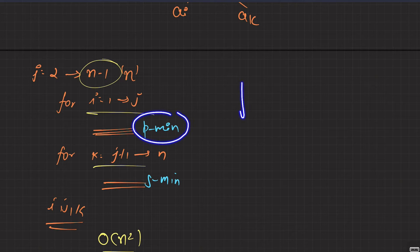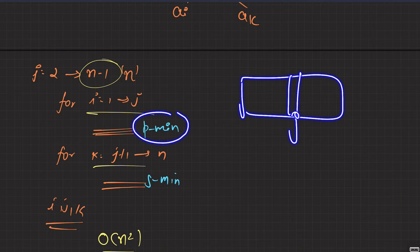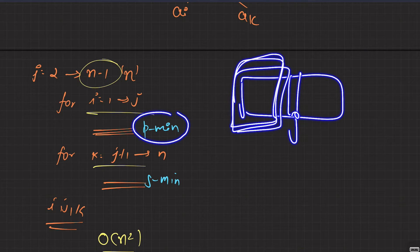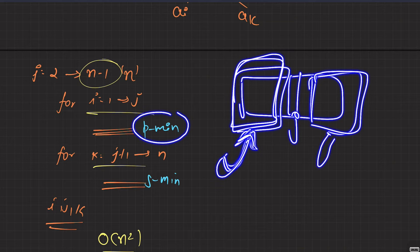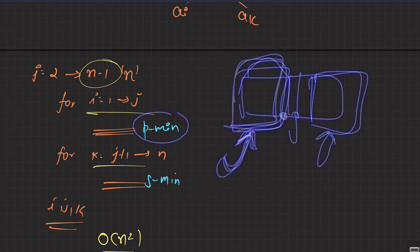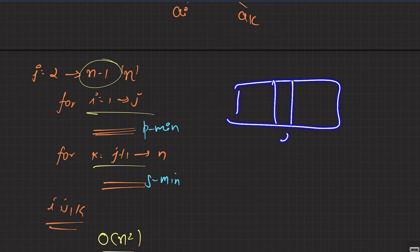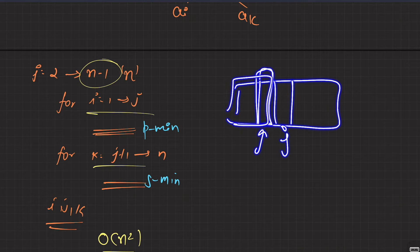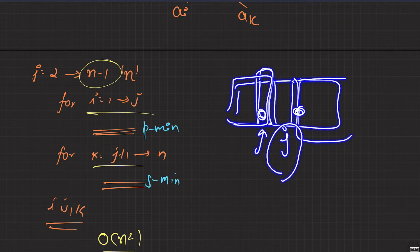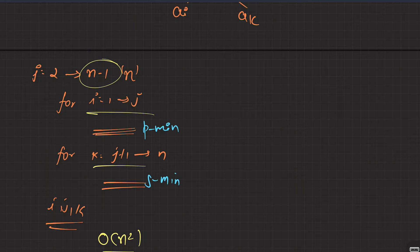For a given value of j, if you can find an element smaller than aj on the left and an element smaller than aj on the right, the job is done. You just need to maintain the minimum of all elements to the left and the minimum of all elements to the right, and by looking at these two values you can figure out whether such indices exist.